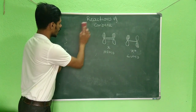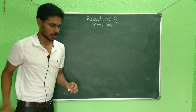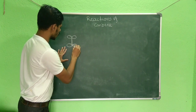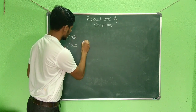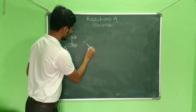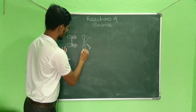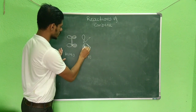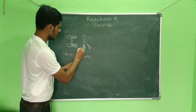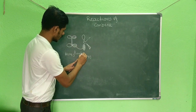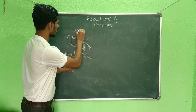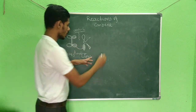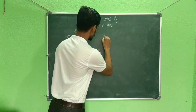Let us see what happens if the carbene approaches the alkene in a head-on manner. If the carbene's LUMO approaches head-on toward the alkene HOMO, you can see that on one side there is a bonding interaction, but on the other side there is an anti-bonding interaction. Overall, the bonding is cancelled out by the anti-bonding, so no net bond is formed by this approach.